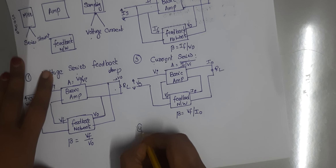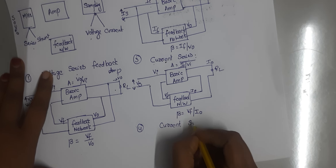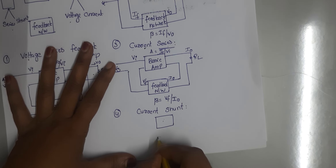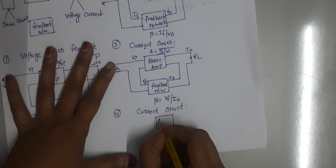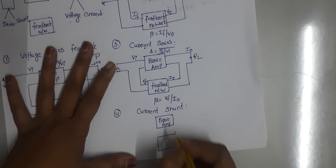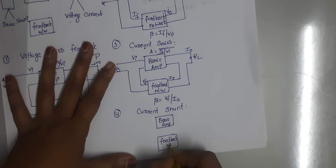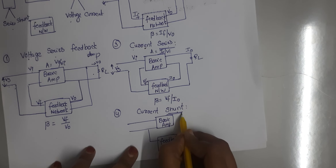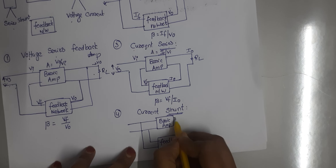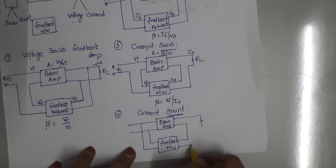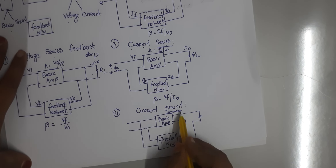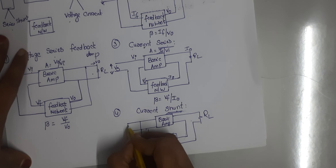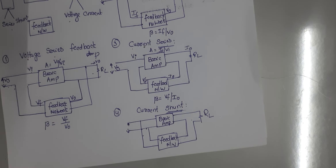The last topology is the current shunt feedback amplifier. Draw the basic amplifier and feedback network. The mixing is shunt mixing, so draw the shunt connection at the input side. The sampling is current sampling. Here RL is connected, and for current shunt mixing, the source signal is a current signal.